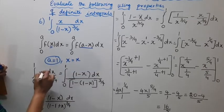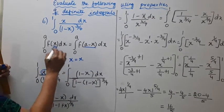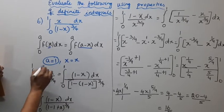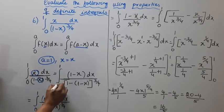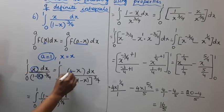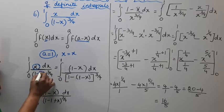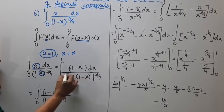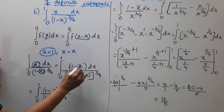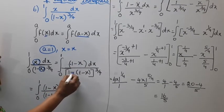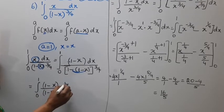Substituting a minus x, where a equals 1: x becomes (1 minus x). So f(a minus x) gives (1 minus x) divided by (1 minus (1 minus x)), the whole power 3 by 4 dx. That simplifies to (1 minus x) divided by x^(3/4) dx, integrated from 0 to 1.